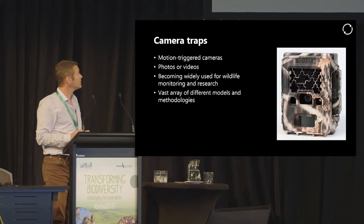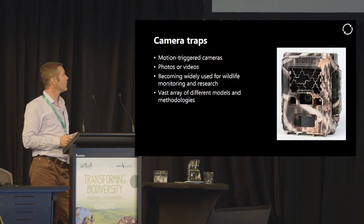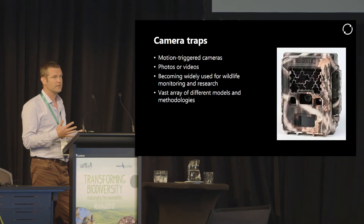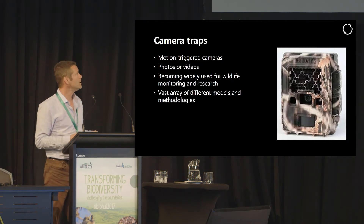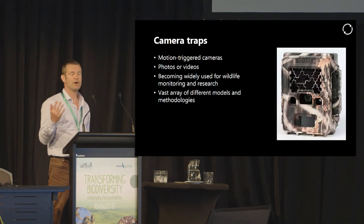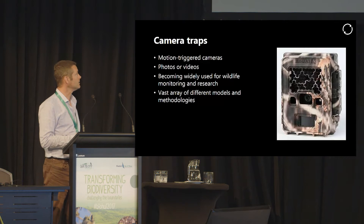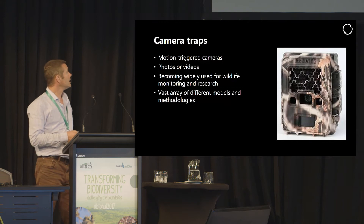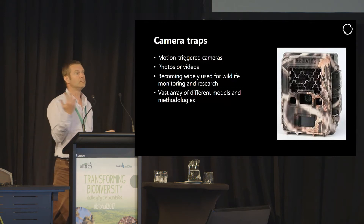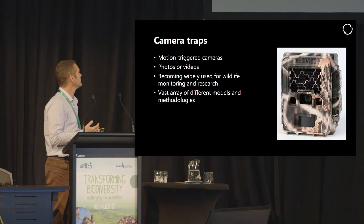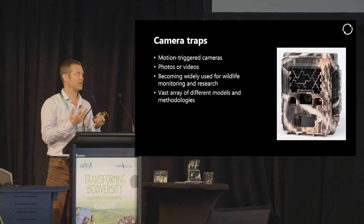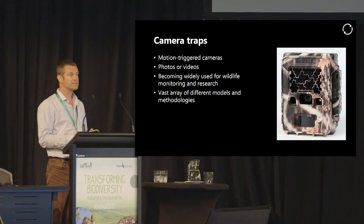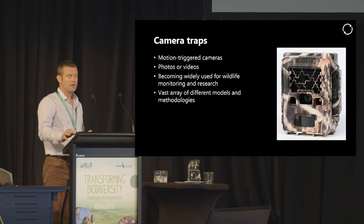So what is a camera trap? This is a photograph of a fairly common model. There are hundreds of different models on the market, but most of them work on a fairly similar principle. They have an infrared motion sensor, same as you would have on a burglar alarm in your house. They're triggered by an animal moving in front of the camera, and they'll take either a photograph, a series of photographs, or a short video clip, so you can see what has moved in front of your camera.